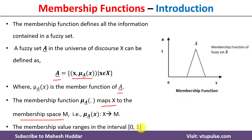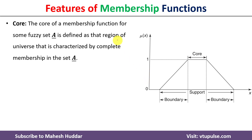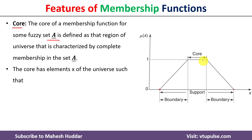The membership value ranges between 0 and 1. Now, coming to the features of membership functions — there are mainly three. The first one is known as the core. The core of a membership function for a fuzzy set A is defined as that region of the universe characterized by complete membership in fuzzy set A. That is, the core is the part of the membership function where the membership value is equal to 1.